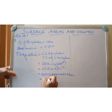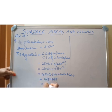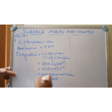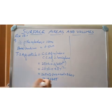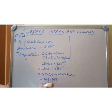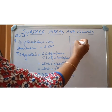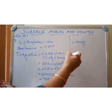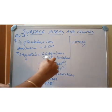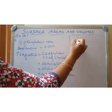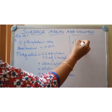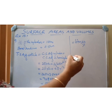That equals 119π. Substituting the value of π as 22/7: 119 × 22/7 equals 17 × 22, which is 374 cm². That is our final answer.